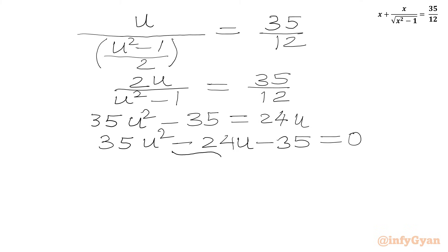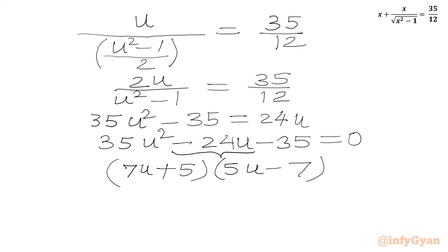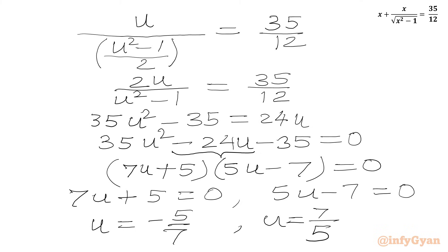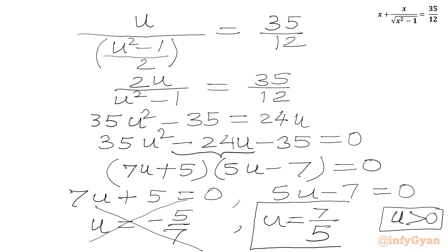We split -24u as -49u + 25u to factor: (7u + 5)(5u - 7) = 0. Applying the zero-product rule gives u = -5/7 or u = 7/5. Since u = sin θ + cos θ must be positive in the first quadrant, we reject -5/7, so the accepted value is u = 7/5.